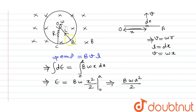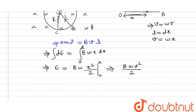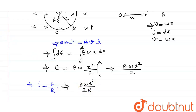Current will flow in a direction that resists the change in magnetic flux. Applying the right-hand thumb rule, the magnetic field generated by this current comes out of the plane, which is opposite to the given external magnetic field — so it opposes the flux change, consistent with Lenz's law. The current is I = EMF / R = BωA² / 2R. This is the final answer for part A.